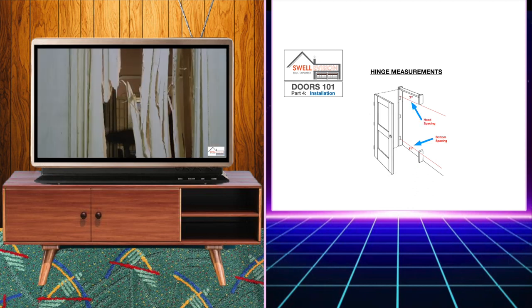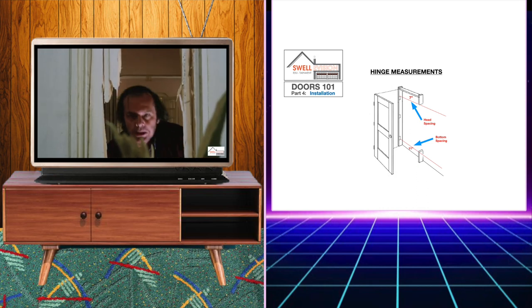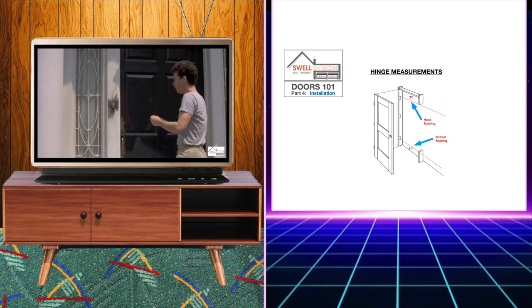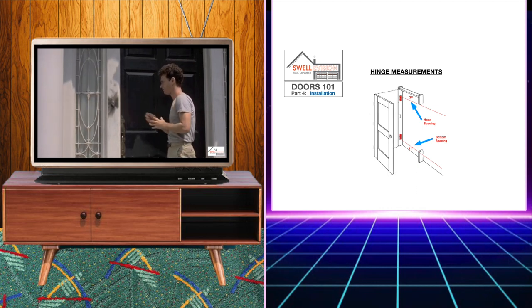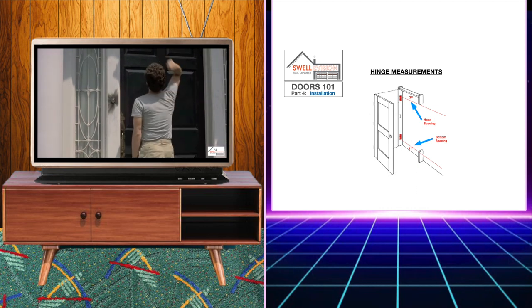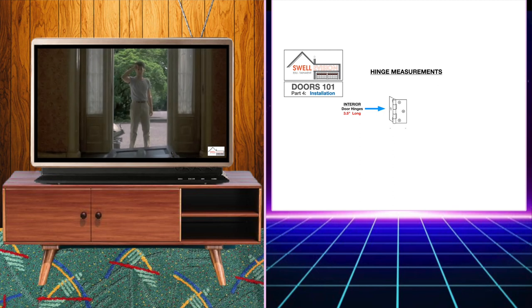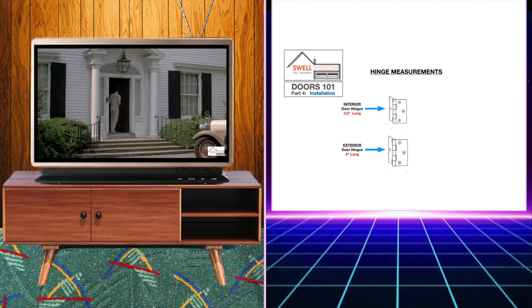The head spacing should be 7 inches, this is the distance from the top of the door to the top of the hinge closest to the top of the door. The two hinges on an interior door should be placed above the bottom spacing mark and below the head spacing mark. The size of a standard door hinge for interior doors is three and a half inches. For exterior doors the standard hinge size is four inches.